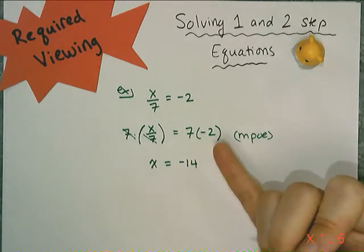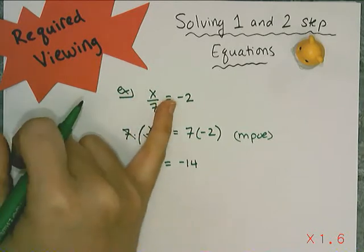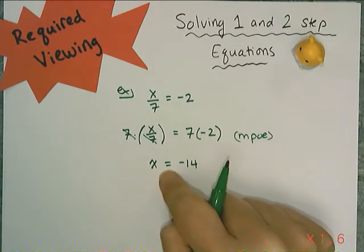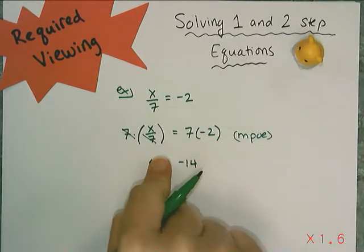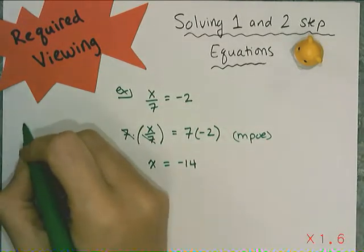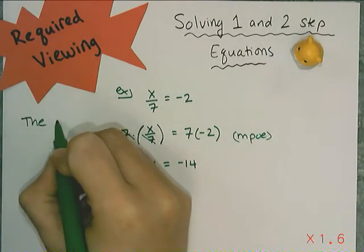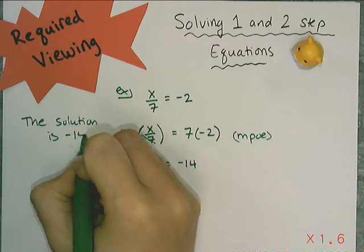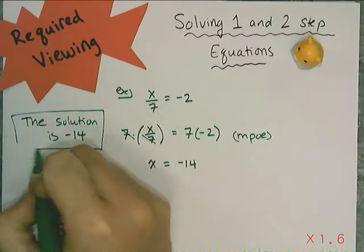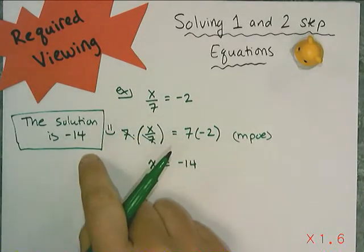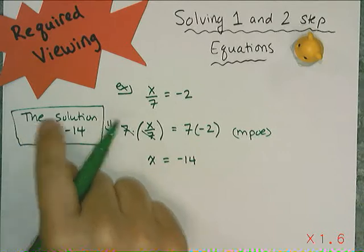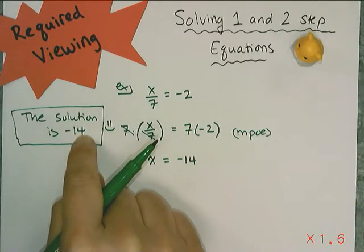It looks like my answer is x equals negative fourteen, so I'm going to double check — I can check these mentally. Negative fourteen divided by seven is indeed negative two. So my answer is actually not written as 'x equals negative fourteen' — my answer is just the negative fourteen. Here's how I want you to write it. You have two options. Option one is to write a sentence that says 'the solution is negative fourteen,' put a little box around it, and happy face it.